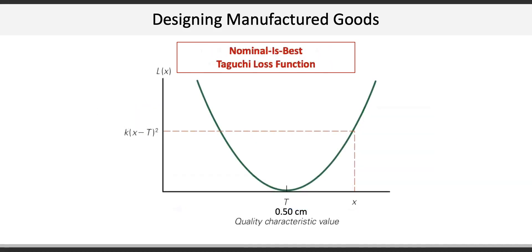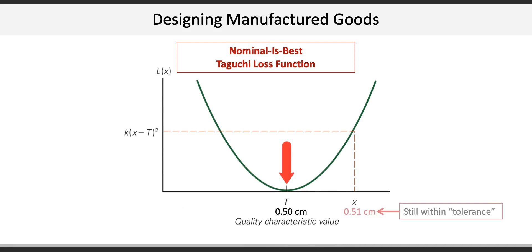The Taguchi loss function determines monetary losses to be greater the more the product varies from nominal. So at 0.50 cm, no losses would be incurred, but at 0.51 cm — which is still within tolerance — losses are still incurred.